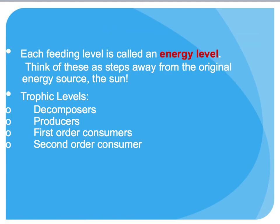Each feeding level is called an energy level or trophic level — think of these as steps away from the original energy source, the sun. There are various trophic levels including decomposers, producers, first-order consumers, second-order consumers, and sometimes third, fourth, or fifth-order consumers. Third, fourth, and fifth-order consumers are very rare because 90% of energy is lost as you move away from the sun.